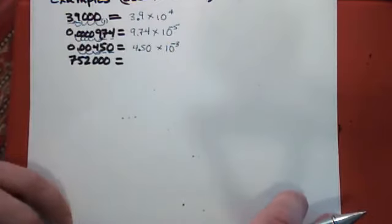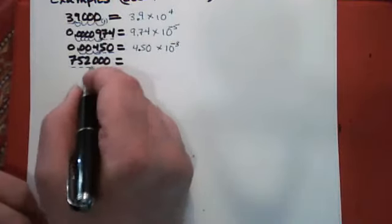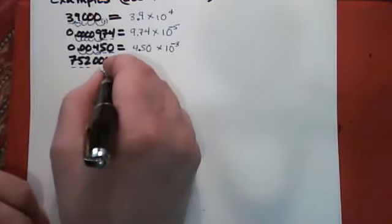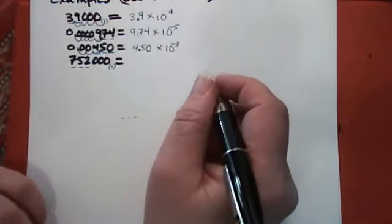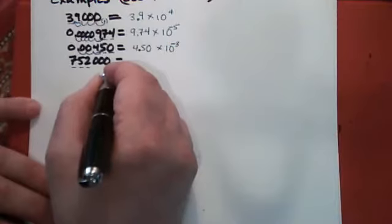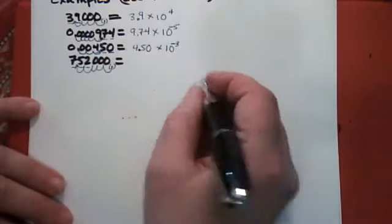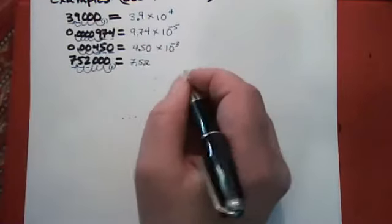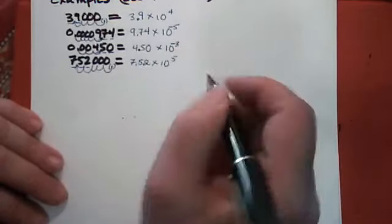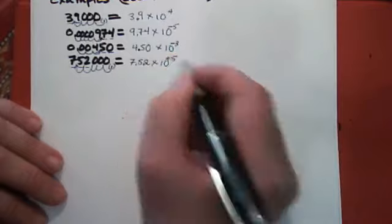For 752,000, this does not have a decimal point, so the 7, 5, and 2 count, but the zeros at the end don't count because there's no decimal point. In changing this number to scientific notation, you do have to write the decimal point in — that's why I'm putting it in parentheses — even though it wasn't there originally. Moving the decimal point to the left five spaces gives a number between 1 and 10. That's 7.52×10⁵. Moving the decimal made the number smaller, so the exponent is positive five to compensate.